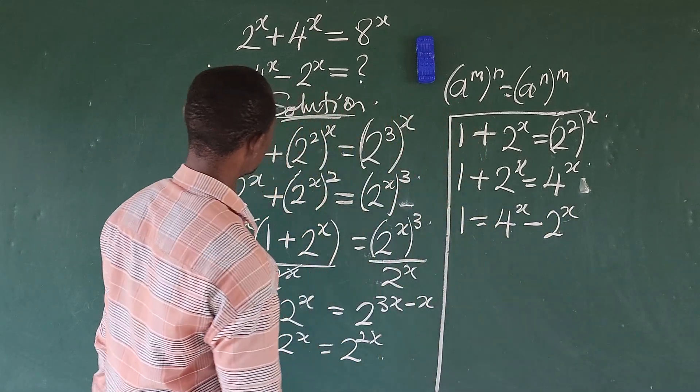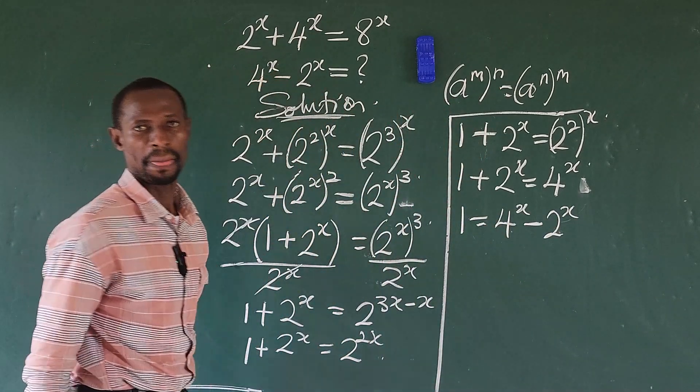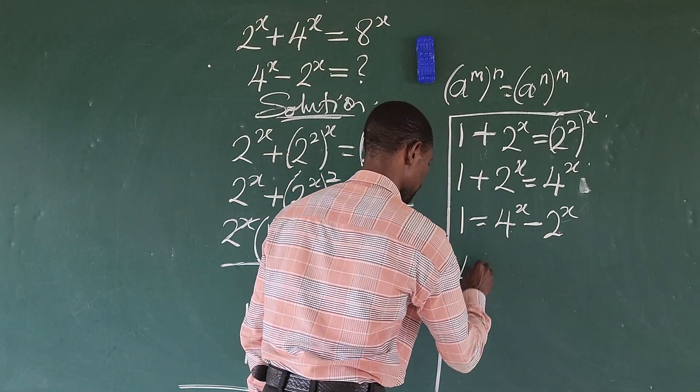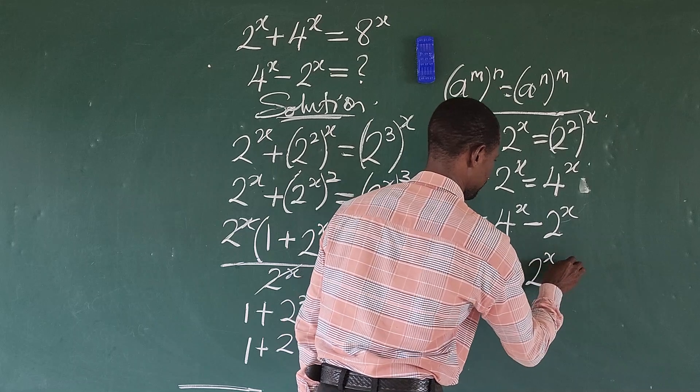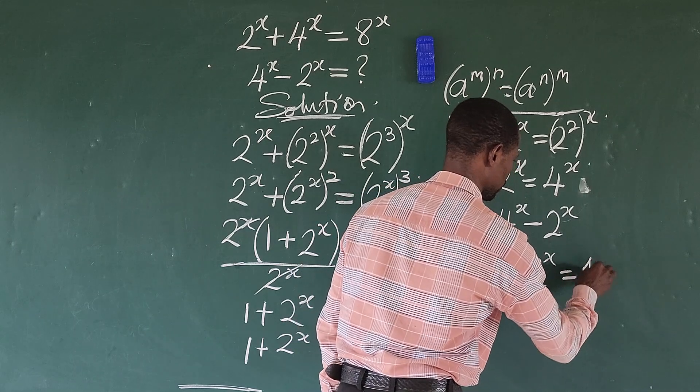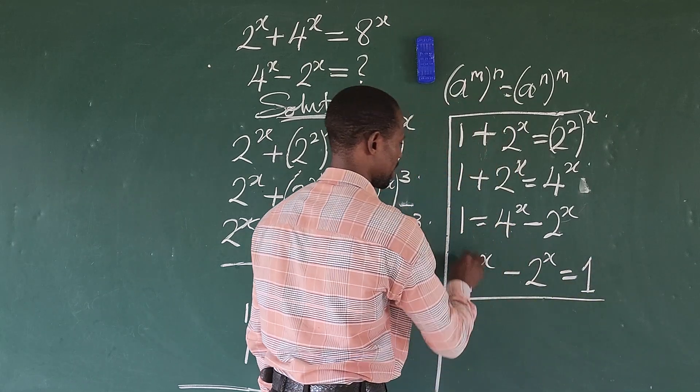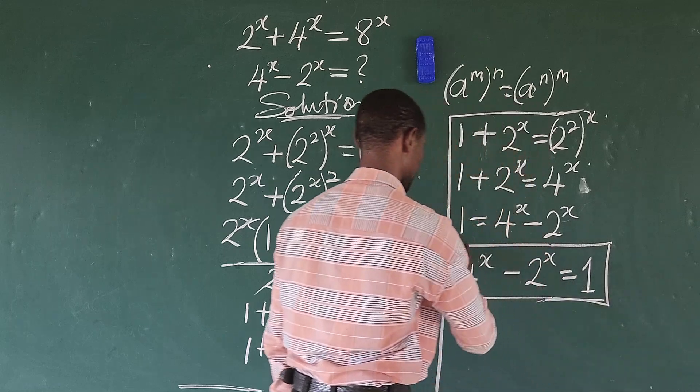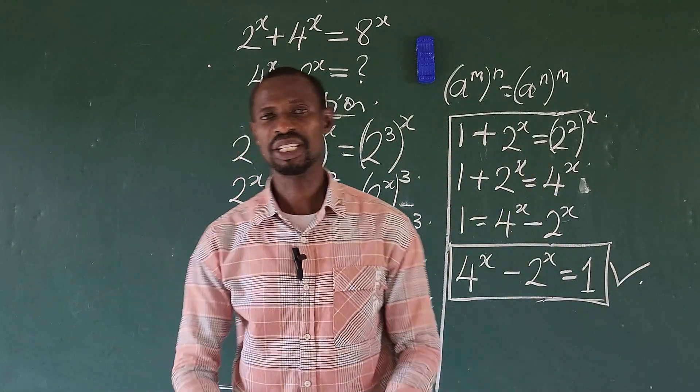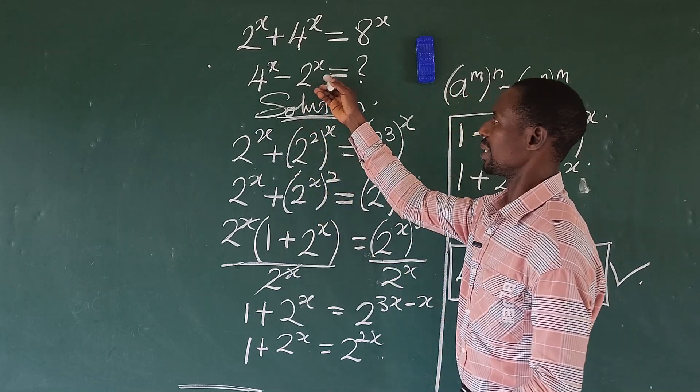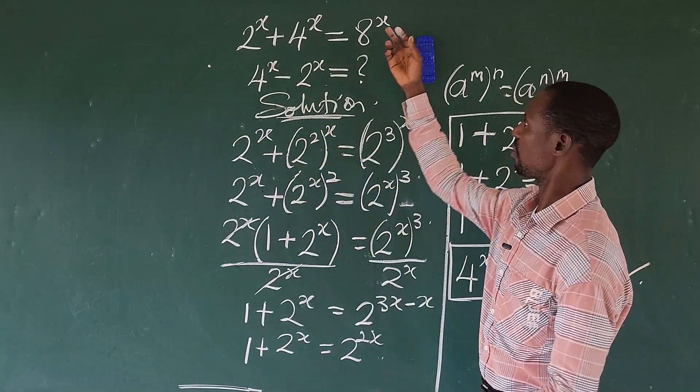Now look at what we were asked to look for. So rearranging, it is going to give us 4 to the power of x minus 2 to the power of x equals 1. So this is what we have to look for. And we have solved it already. This is the quickest method to get this expression from the original equation.